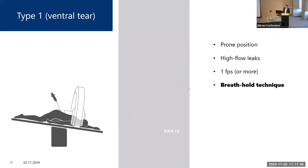Starting with the Type 1 leak — the ventral dural tear — the patient is in the prone position with pillows under the hips so that the contrast can overcome the kyphosis and spread along the spine. These leaks are very high-flow: we found it takes approximately 1.6 seconds for contrast to traverse the dural tear. We perform one frame per second or more with a breath-hold technique.